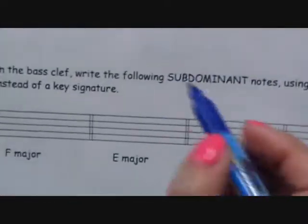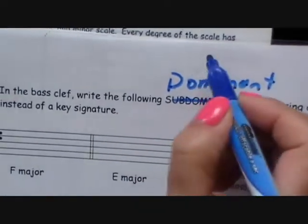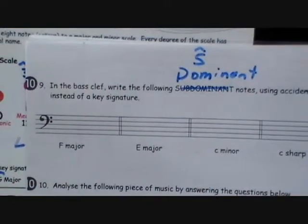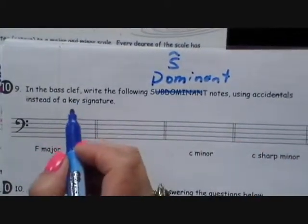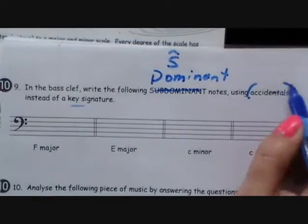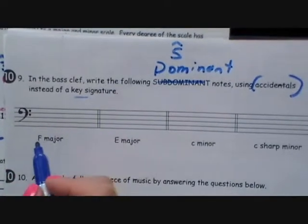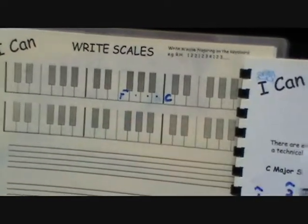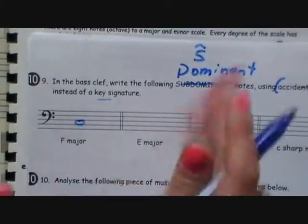Here's another type of question in the bass clef. Let's do the dominant. The dominant means the 5th degree of a scale. In the bass clef, write the following dominant notes using accidentals instead of a key signature. Remember to read this question carefully — a lot of times students just put in a key signature without reading that it needed accidentals. Let's do the dominant of F: 1, 2, 3, 4, 5 — it will be C. F major has a B flat in the key signature, but we don't need that here.